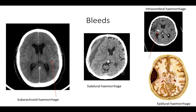When discussing any intracranial bleed with the neurosurgical team, always document the patient's GCS, as it is an important indicator of whether surgical intervention is required.